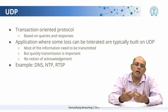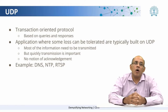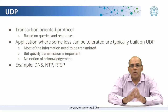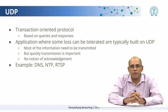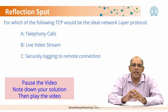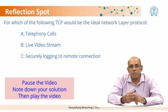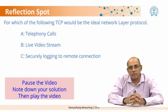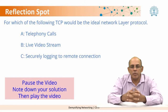UDP is used for several applications. DNS, for example, is one of them, and the Network Time Protocol is another. Having had a brief glimpse of TCP and UDP, let us take a reflection spot. For which of the following would TCP be the ideal transport layer protocol? A: making telephone calls, B: a live video stream, or C: securely logging in to a remote connection. Take a moment to think about it — which one will be your answer and why — and then proceed.